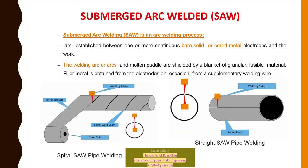Submerged arc welding (SAW) is an arc welding process established between one or more continuous bare solid or cored metal electrodes and the work. The welding arc and molten puddle are shielded by a blanket of granular flux material; filler metal is obtained from the electrode and occasionally from supplementary welding wire. There are two types of SAW pipe: spiral SAW pipe welding and straight SAW pipe welding.